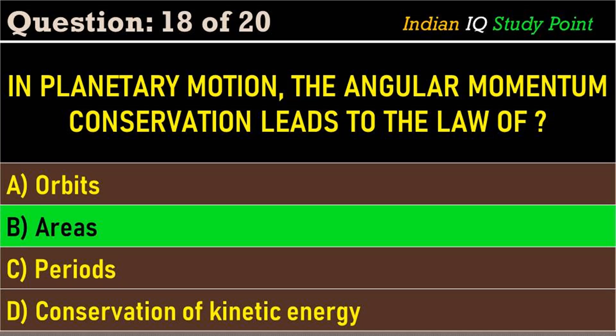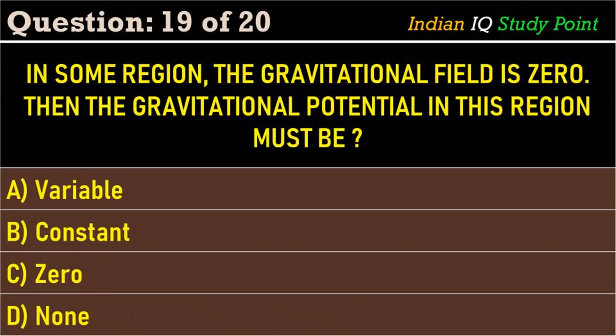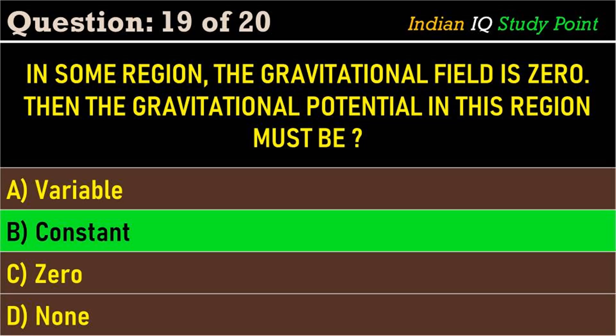Coming to the next question: in some region the gravitational field is zero — then the gravitational potential in this region must be — option A: variable. Option B: constant. Option C: zero. Option D: none of the above. The correct answer is option B: constant.